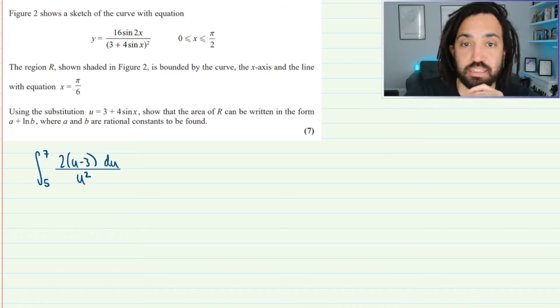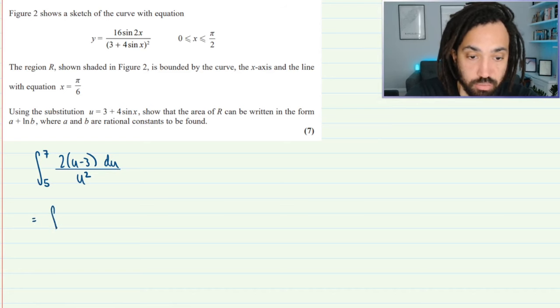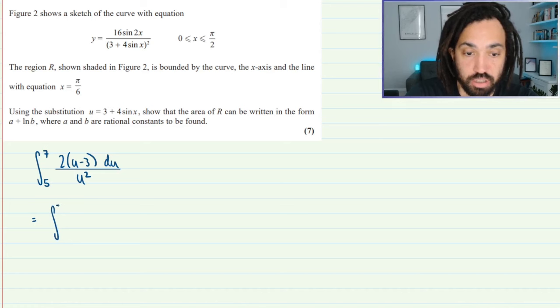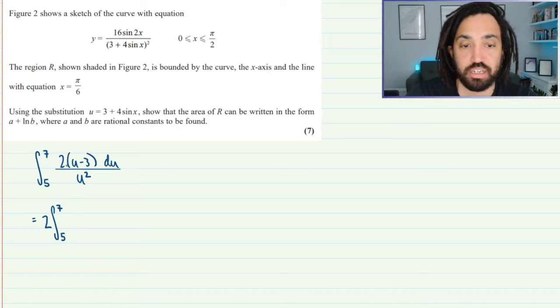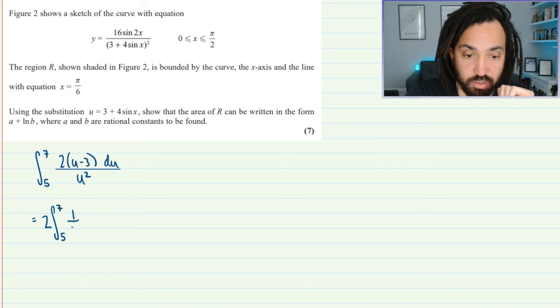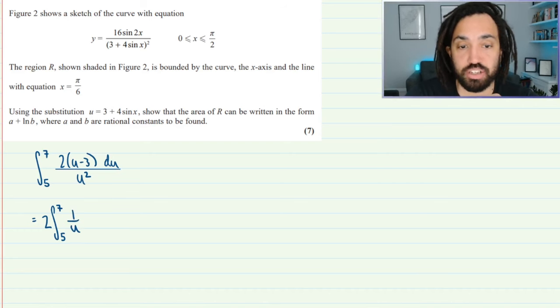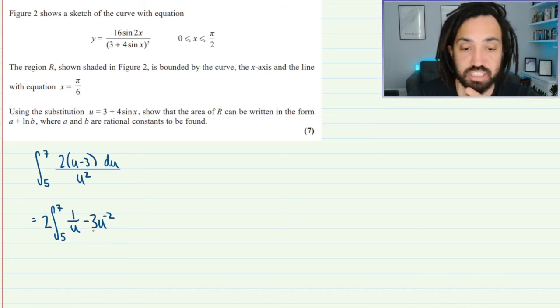Okay we're back, so what I'm going to do next is I'm going to expand this. So what I will do is I will take the 2 out outside because it's a constant we can do that but only if it's a constant. So I'm going to have u divided by u squared which is 1 over u and I'll have minus 3 divided by u squared which is minus 3 u to the minus 2, that makes it just easier to integrate.